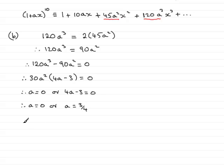So, since a we're told is a positive constant, that's a is greater than zero, therefore we can see that a has to equal 3 quarters.